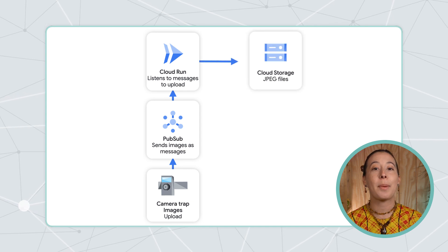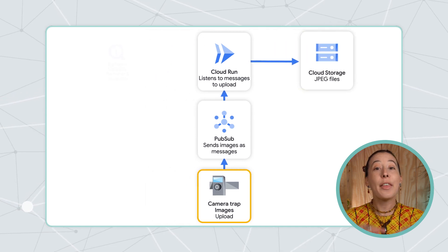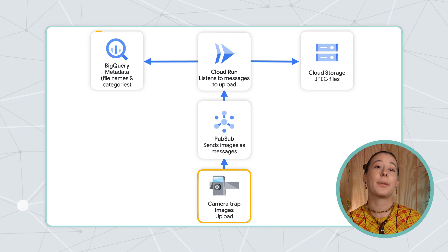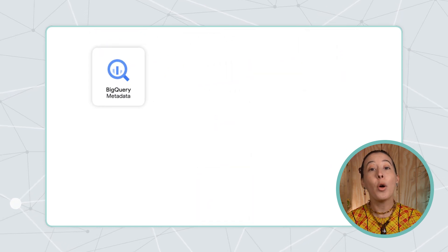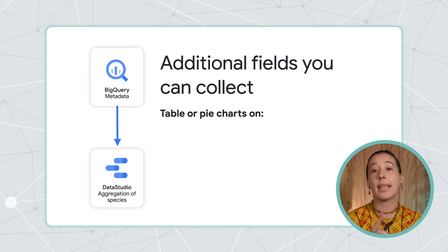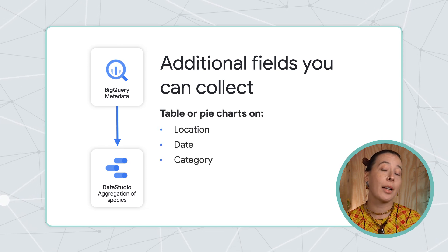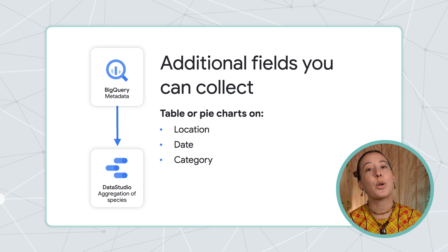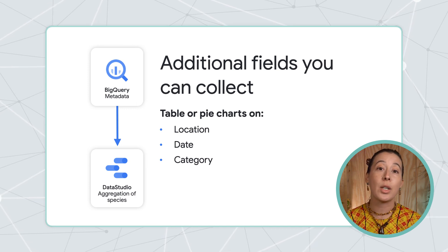We can save the classified images as JPEG files directly into Cloud Storage and their metadata into BigQuery. Note that you can optionally collect more metadata information such as the camera trap's location, the date, etc., and build a simple dashboard to report aggregated insights about species.